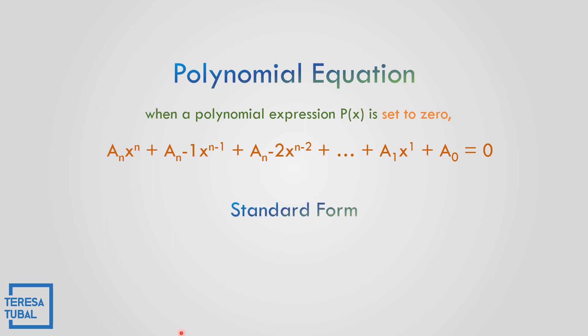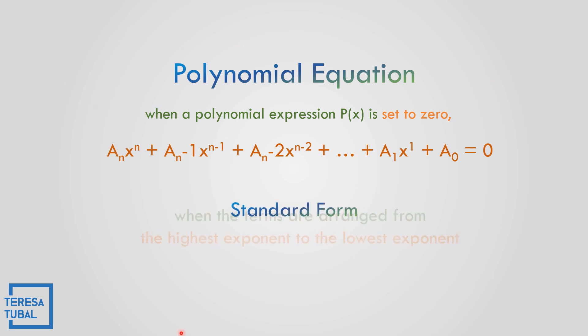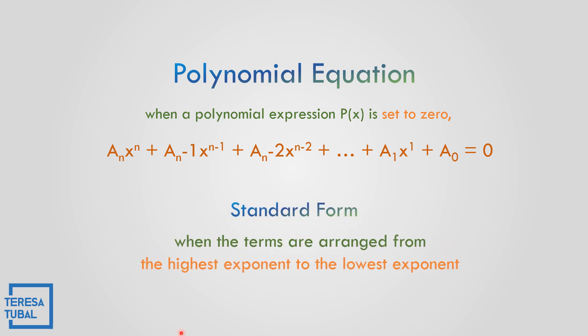Next, what could be the standard form of the polynomial equation? It is when the terms are arranged from the highest exponent to the lowest exponent, and then equal to 0.